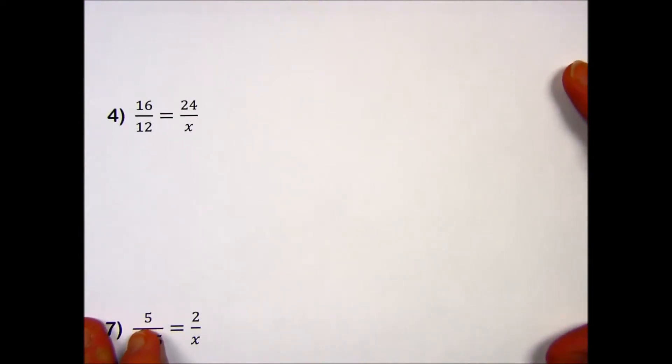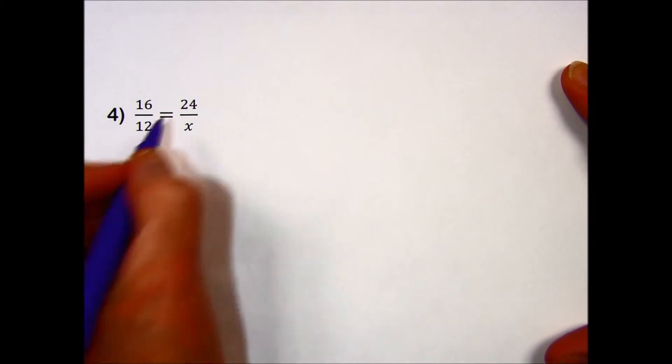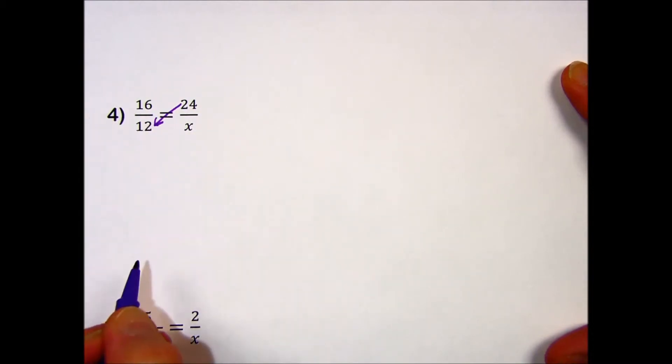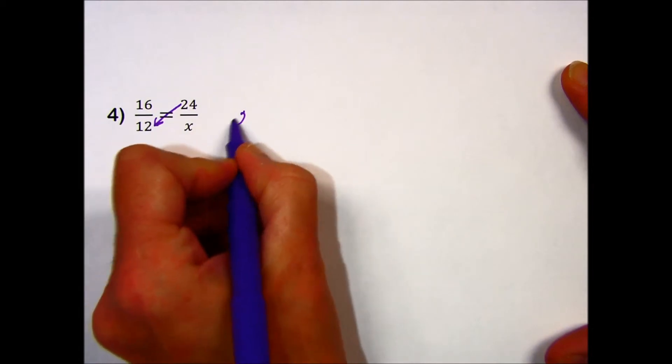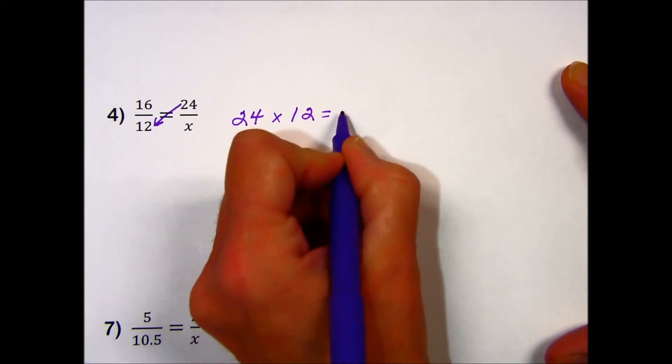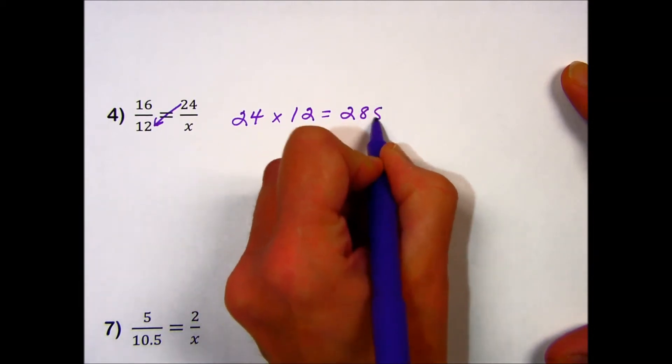In problem number four, to use the cross-multiplication technique, we start by multiplying the two numbers in the diagonal that are present. 24 times 12 results in 288.